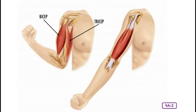Most muscles work in pairs. Muscles only pull on bone — they cannot push. As your muscles pull on bone, they contract or get shorter. In order to relax or lengthen, muscles need a partner to pull the bone in the opposite direction. Paired muscles never pull at the same time: one pulls while the other relaxes, and then one relaxes while the other pulls.